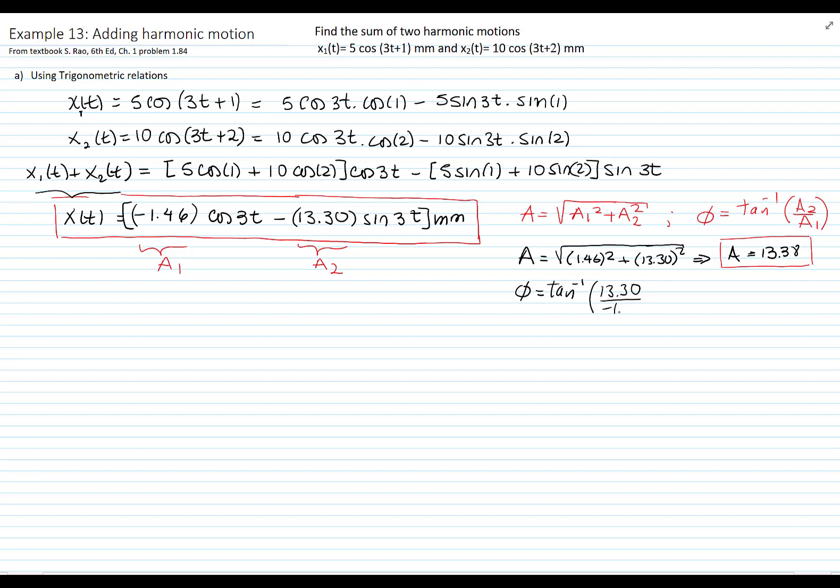And the phase angle is the tangent of a2 over a1, and a1 is negative. So be careful about the angle right here. This gives me an angle of 96.2 degrees. Maybe if you plug these numbers in the calculator, it can give you a different angle because this is negative 1.46 and this is 13.30. So this angle is 83.7. You may have gotten that angle in the calculator, but remember the one we are using is always the one from the x-axis. In this case, it's 96.2.